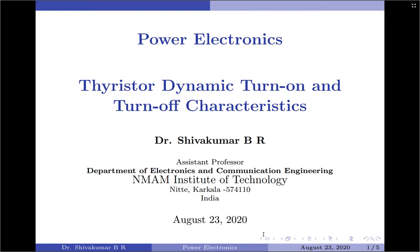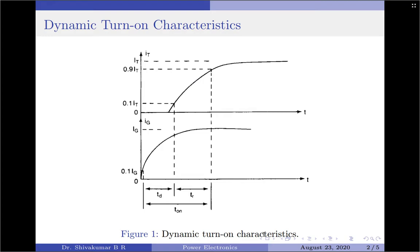Hello everyone, welcome to Power Electronics. In this session we will discuss the thyristor dynamic turn-on and turn-off characteristics. When the SCR is turned on with the application of the gate signal, the SCR does not respond immediately. In the beginning there is no appreciable increase in the SCR anode current, because only a small portion of the silicon pellet in the immediate vicinity of the gate electrode starts conducting. There is a time delay known as the turn-on time, represented by t_on, between the application of the gate signal and the conduction of the thyristor.